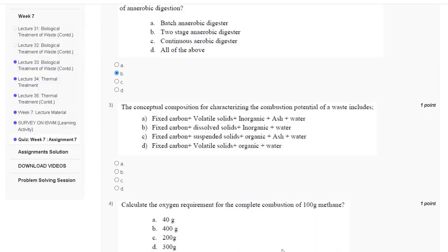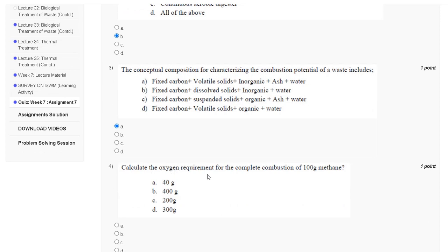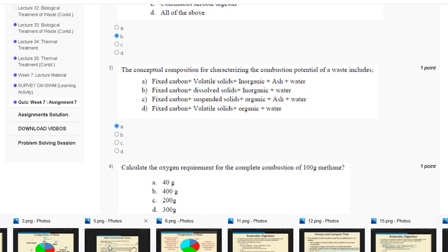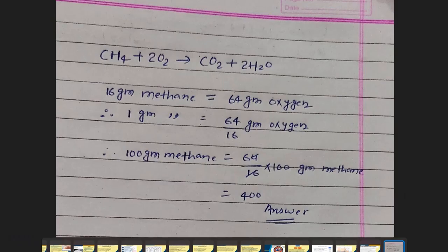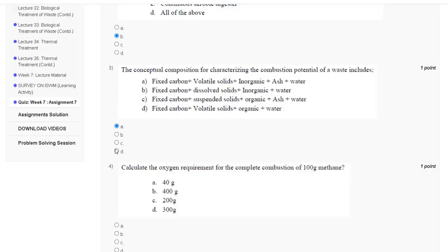Question number 4: calculate the oxygen requirement for complete combustion of 100 grams of methane. The equation is CH4 + 2O2 → CO2 + 2H2O. Since 16 grams of methane requires 64 grams of oxygen, 100 grams of methane requires 64/16 × 100 = 400 grams of oxygen. The correct answer is option B: 400 grams.